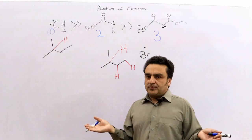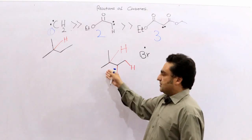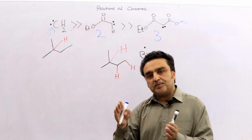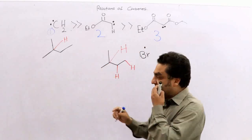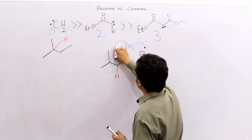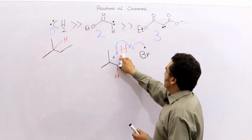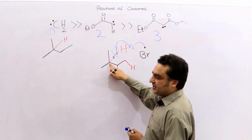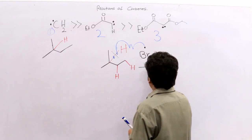Suppose the bromine radical came to the scene and you place it with this substrate. Our aim is to understand why those carbenes are more selective in their nature and also stereospecific. This radical reacts with the substrate because this tertiary C-H bond has two electrons. One electron reacts with the bromine radical, and a bromine-hydrogen bond is formed. The bond at the tertiary carbon is broken, and the electron sits on that carbon atom.